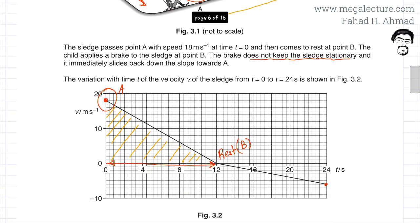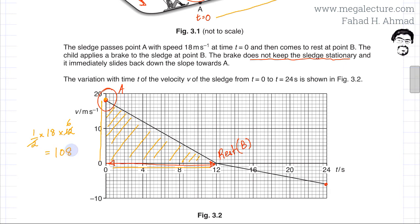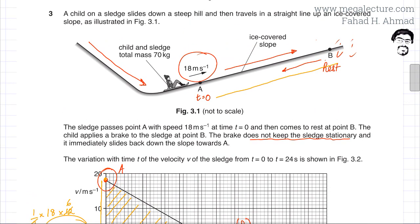Going back to the graph, the distance covered from A to B in the first 12 seconds is the area under the graph. Since the sledge comes to rest at B, this is a triangle: area equals one-half times velocity times time, which is one-half times 18 meters per second times 12 seconds. Simplifying, that's 18 times 6 equals 108 meters. So the distance from A to B is 108 meters, covered in 12 seconds.